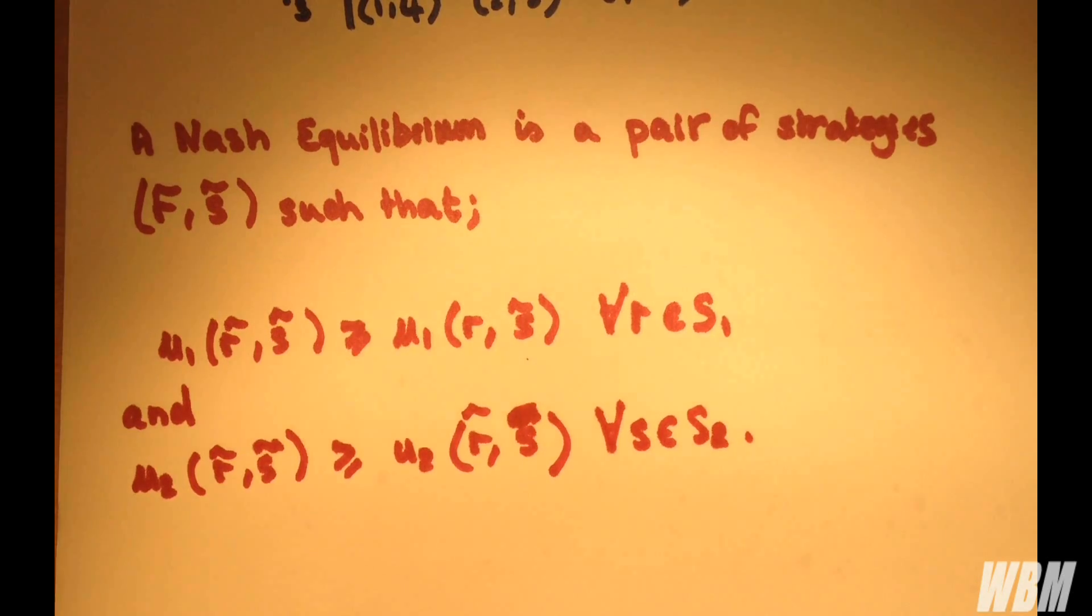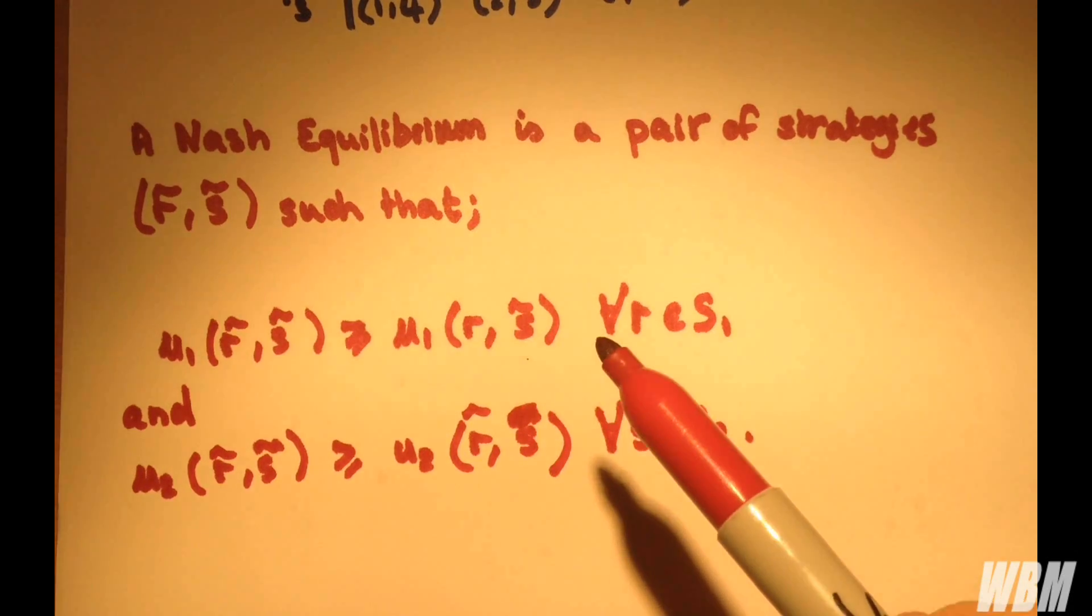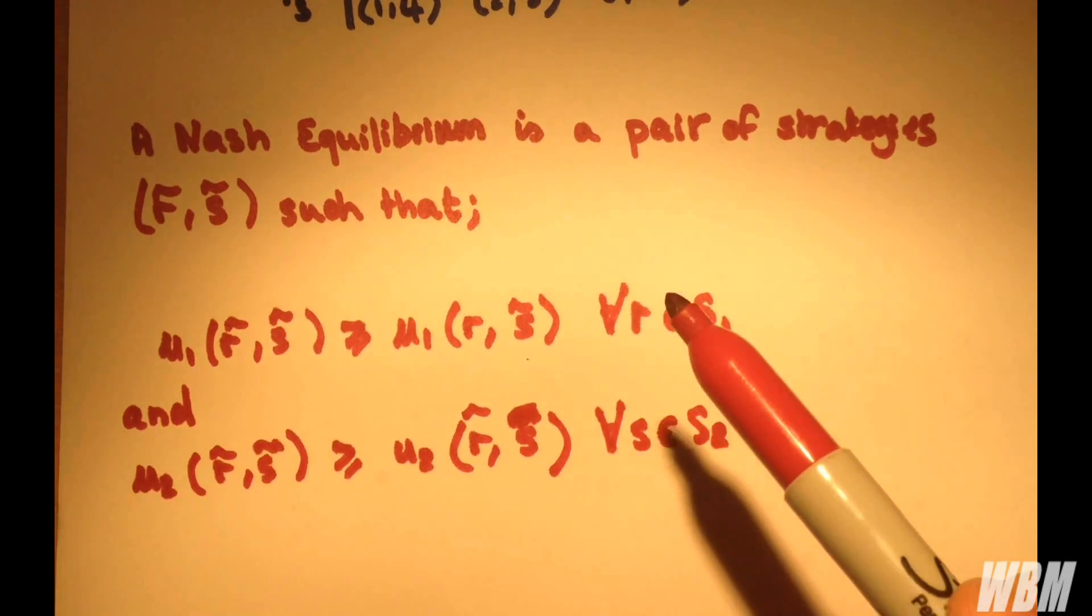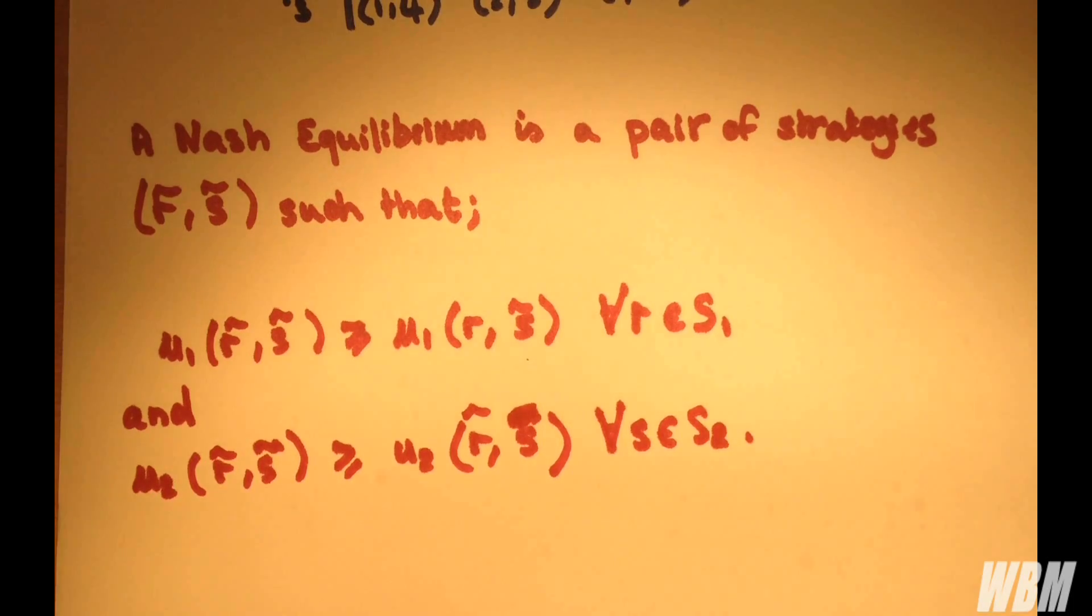So, at a Nash equilibrium, neither player has anything to gain by changing their own strategy. It's essentially a place on a game matrix where they will just end up staying no matter how long the game goes on for. We can find a Nash equilibrium or Nash equilibria by checking every strategy pair and we see if either player can improve their situation from that strategy. However, there's actually a pretty nice way of looking which is called the best response strategy and I can quickly show you that now.